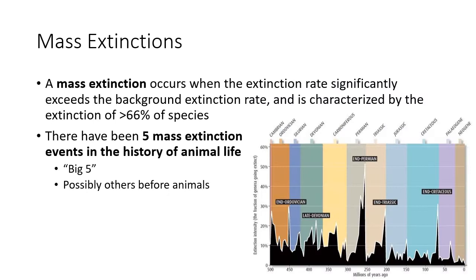An extinction is simply when a species has no living representatives on the planet. A mass extinction is when there is a significantly higher extinction rate, and within a small region of geologic time — which could be a few million years, a blink in geologic time — over 66%, or two-thirds, of the species on the planet go extinct. There have been five mass extinctions since the history of animal life, referred to as the Big Five.